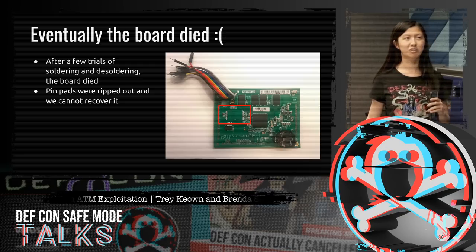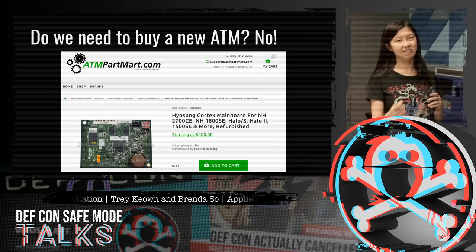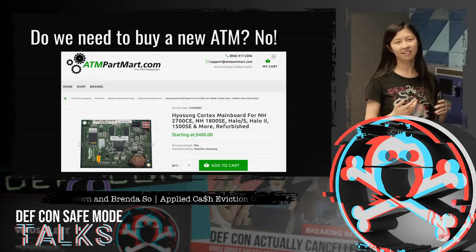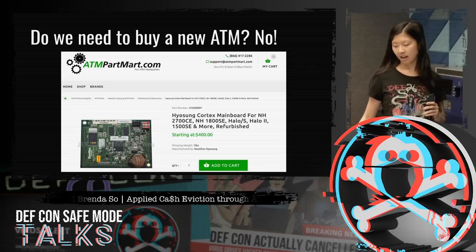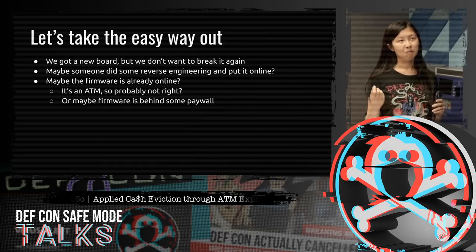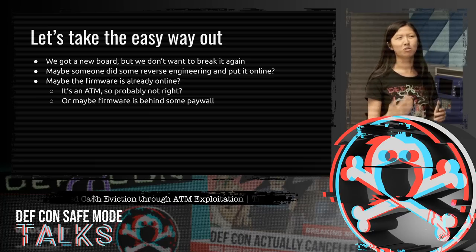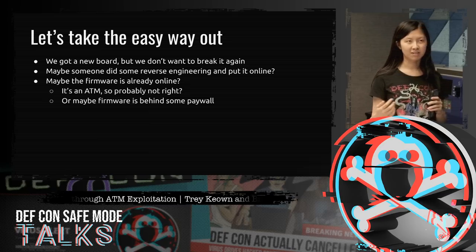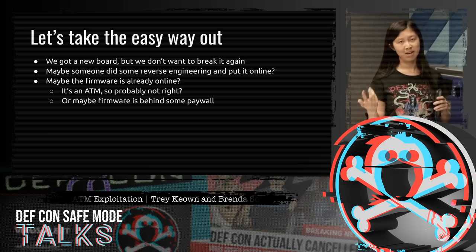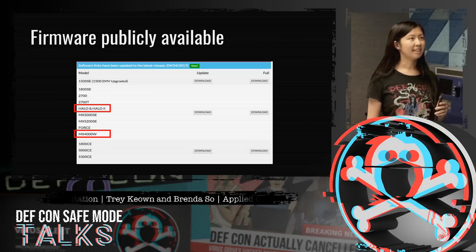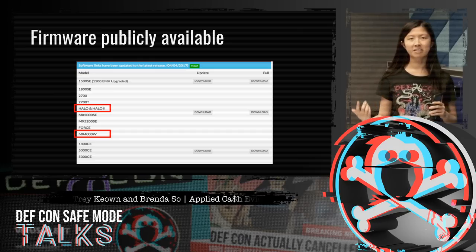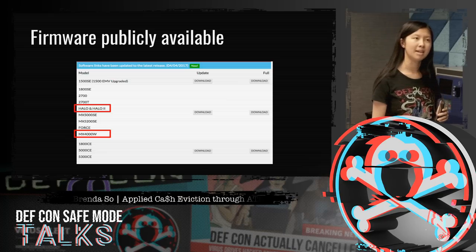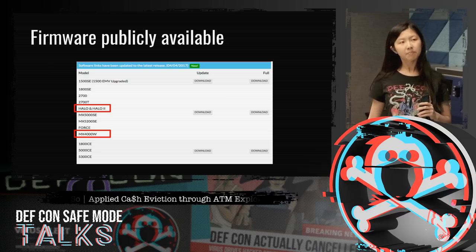We found we could buy replacement main boards for $400 at atmpartmark.com. But instead of desoldering again, we searched online and found the firmware is actually publicly available. Both ATM versions we had shared the same firmware update, so we only needed to download it once. The firmware update contains three main files: the bootloader, nk.bin where the kernel and libraries are stored, and most importantly a master.zip with all the application binaries — including the ATM executable, libraries, audio files, and JPEG images.